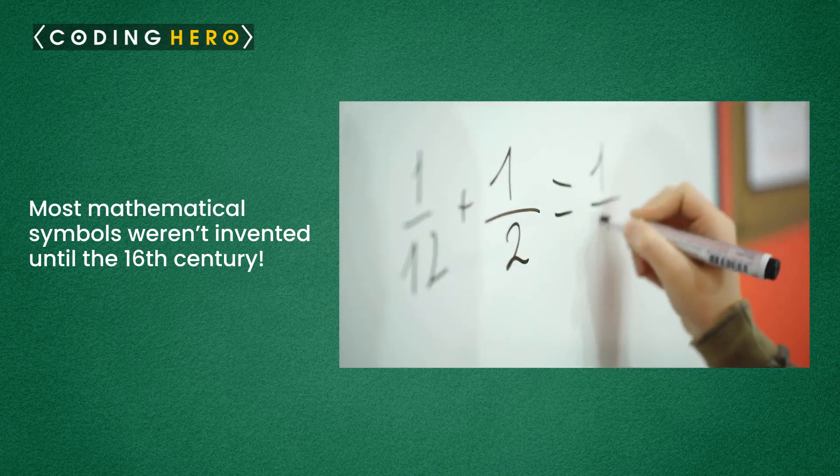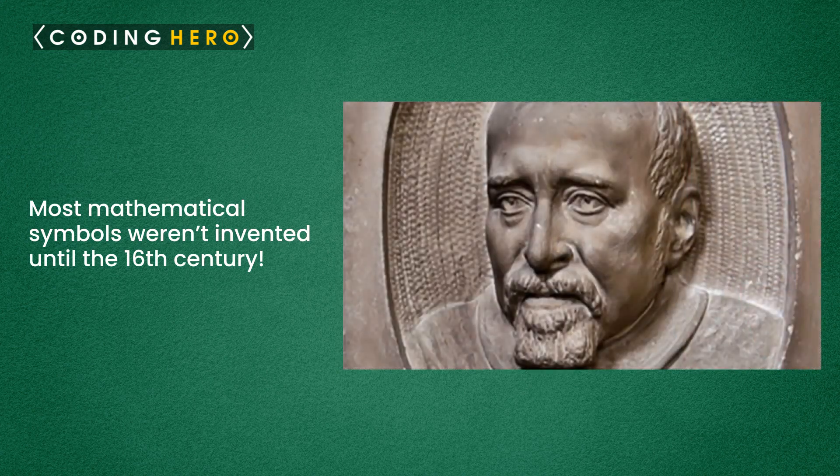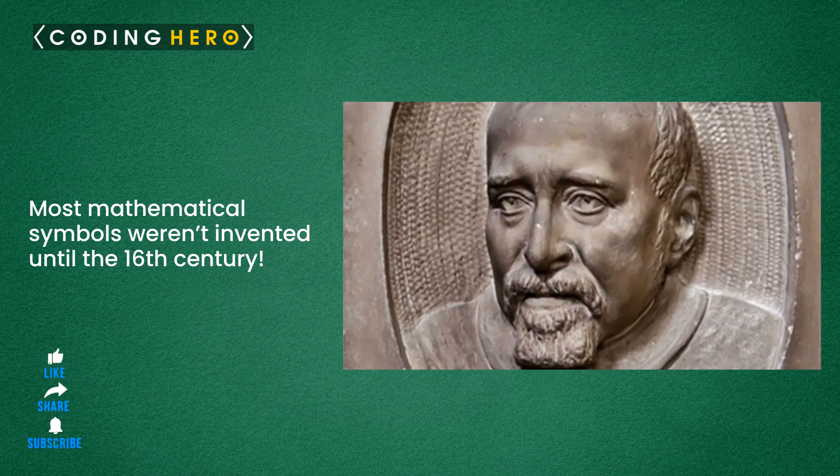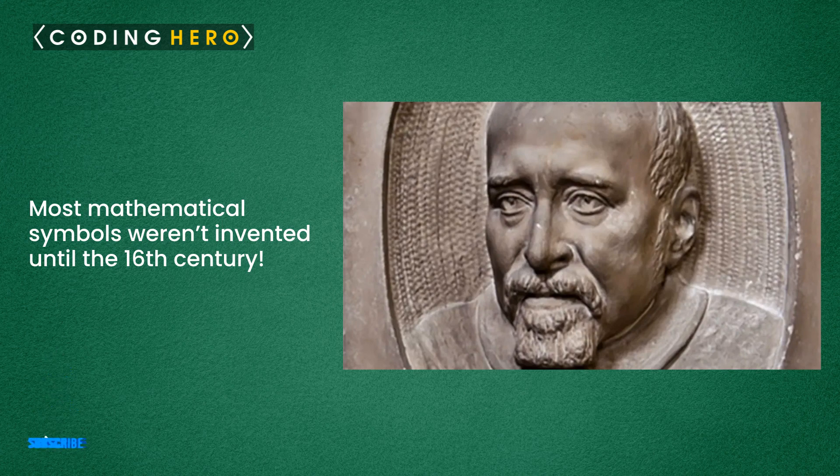Before the 16th century, people used to write equations in words. Robert Record, the designer of the equals sign, introduced plus and minus to Britain in 1557 in the Whetstone of Witte.